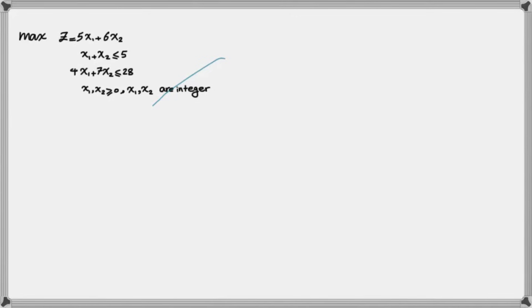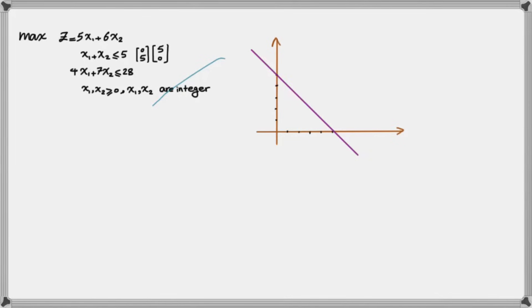Suppose that we relax the assumption that x1 and x2 are integer and we're trying to solve this problem using the graphical method. We have to find two points for each of these lines and also find the direction that satisfies the constraints. I find two points for the first line: (0,5) and (5,0). Connecting these gives the first line, and the side that includes point (0,0) is the side I'm interested in. For the second line, I find two points (0,4) and (7,0), and point (0,0) satisfies that constraint as well.